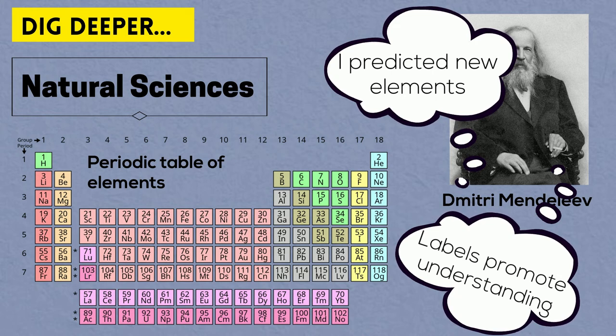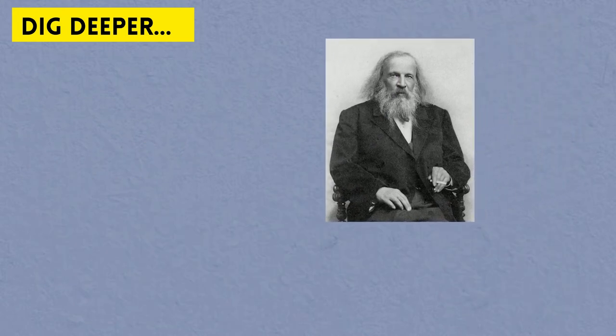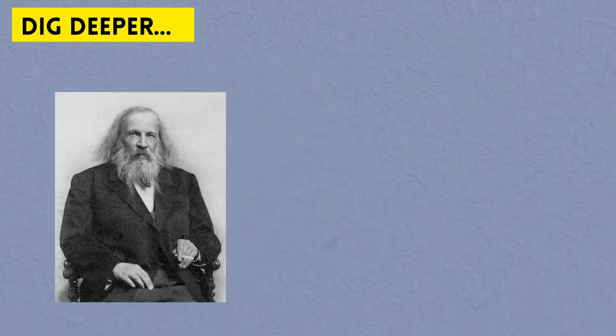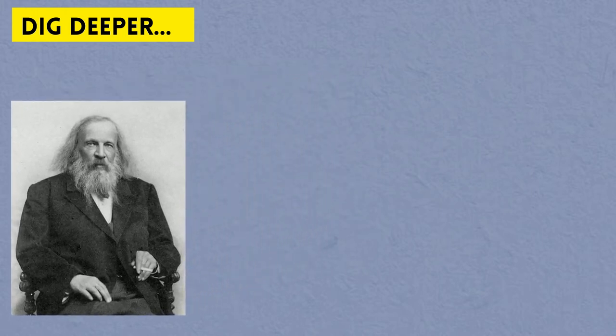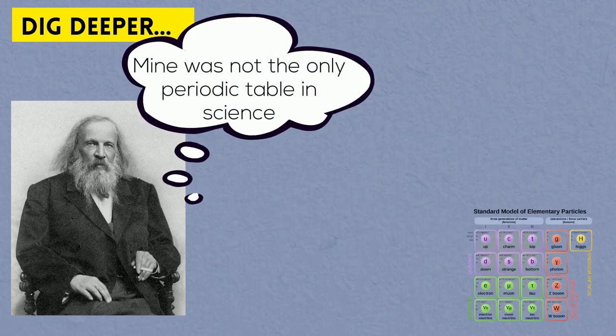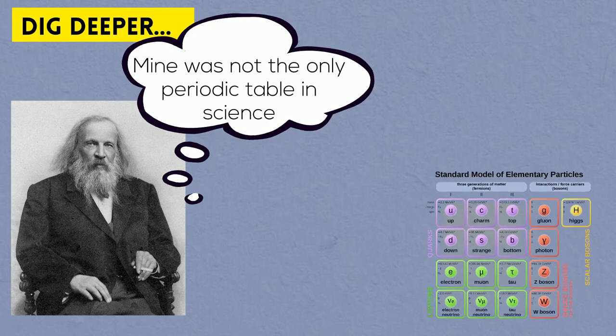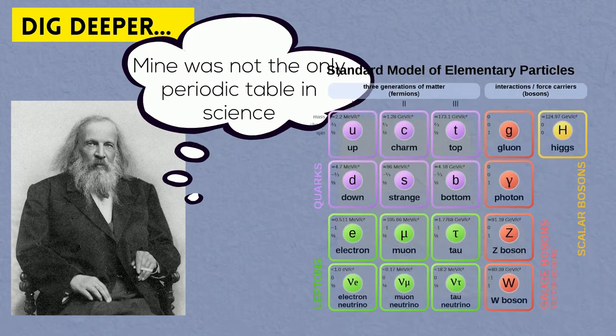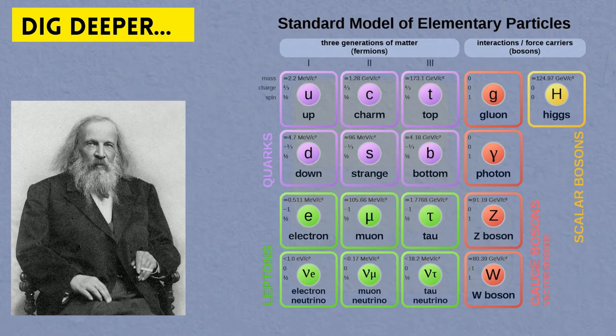Mendeleev is still quite an overused example though, so if you want to be slightly more original than that, just do a quick Google search on periodic tables and science, and you will find, for example, the recently developed periodic table of elementary particles labels that served science pretty much the same function, allowing us to predict the existence of new quarks and leptons and bosons and other subatomic particles.